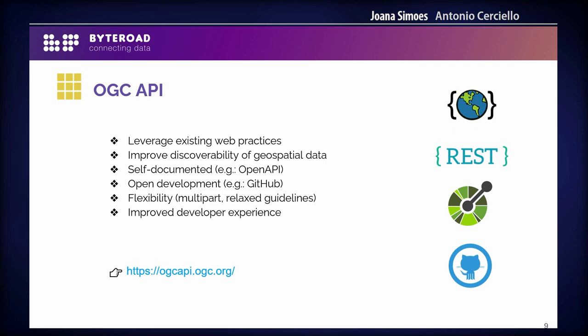Now we have this family of APIs — the OGC APIs — and they are leveraging the practices that we see in the modern web. They are using the HTTP methods, status codes, content negotiation, and so on. They are using Schema.org to make sure that the data is seen by search engines, because people are searching for data in Google these days. They are using the OpenAPI specification.